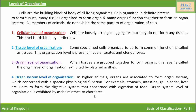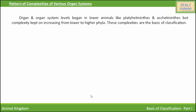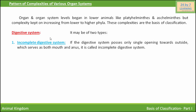Organ system level of body organization is exhibited by aschelminthes to chordates. The second fundamental feature used as a basis of classification is the pattern of complexities of various organ systems. Organ and organ system levels begin in lower animals like platyhelminthes and aschelminthes, but complexities keep on increasing from lower to higher phyla, and these complexities are the basis of classification.